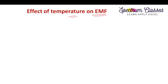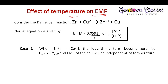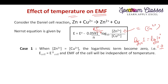Now we calculate the effect of temperature on the EMF of the cell using the Nernst equation. Case 1: If [Zn²⁺] equals [Cu²⁺], the log term becomes log(1) = 0, so E = E°. At equilibrium, when both ion concentrations are equal, the relationship between E and E° is independent of temperature.